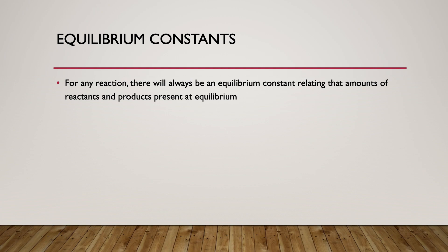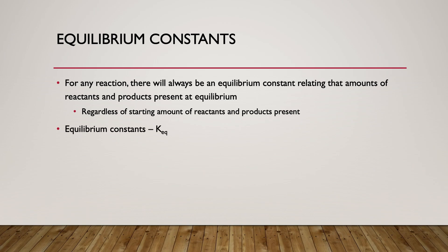When we talk about equilibrium from a calculational standpoint, we often discuss an equilibrium constant. This is a ratio of the amounts of products to reactants present at equilibrium. For any given reaction, as long as it's at the same temperature, that ratio of reactants to products should always come out to be the same, regardless of how many reactants or products you actually started the reaction with.